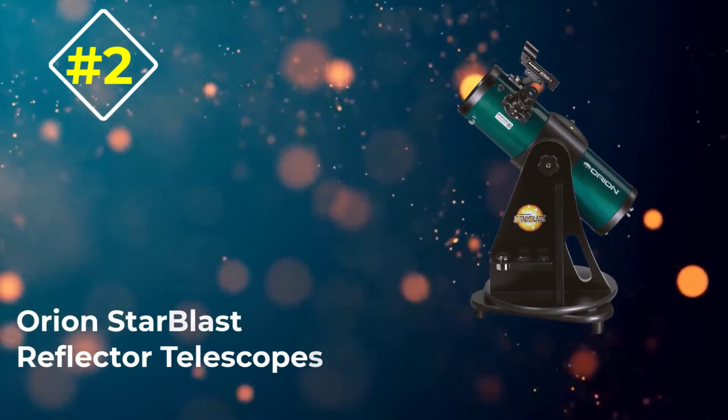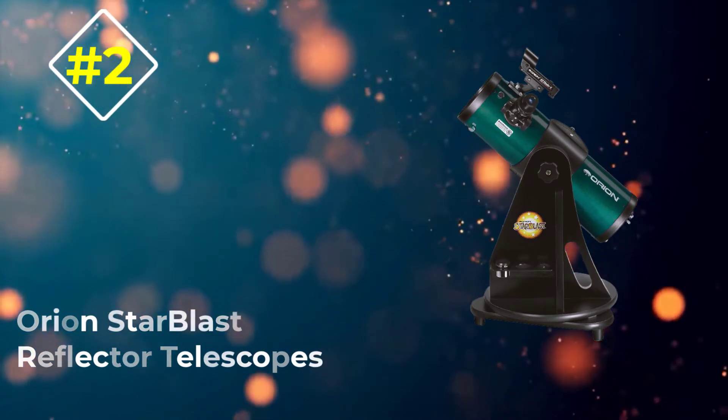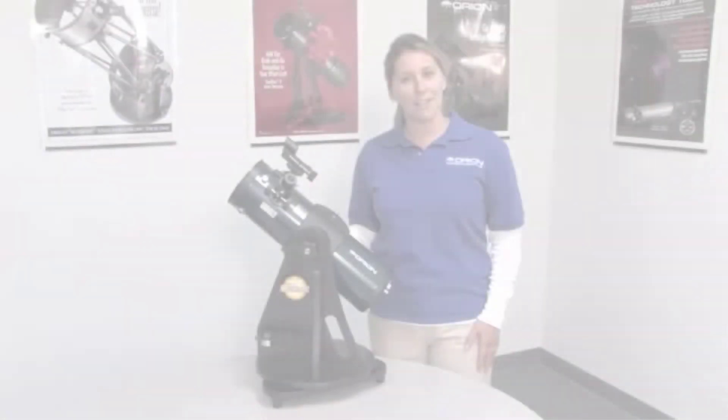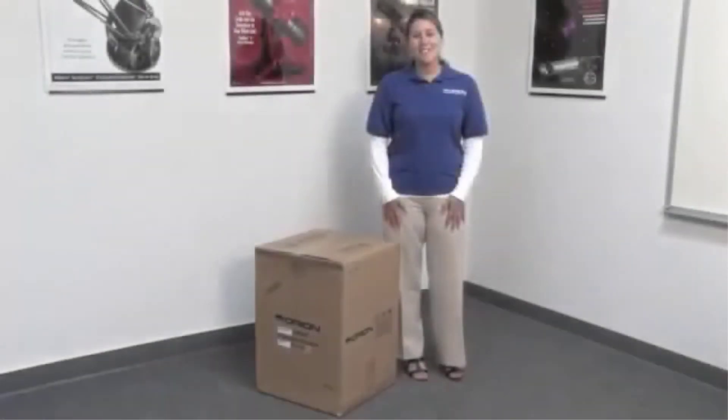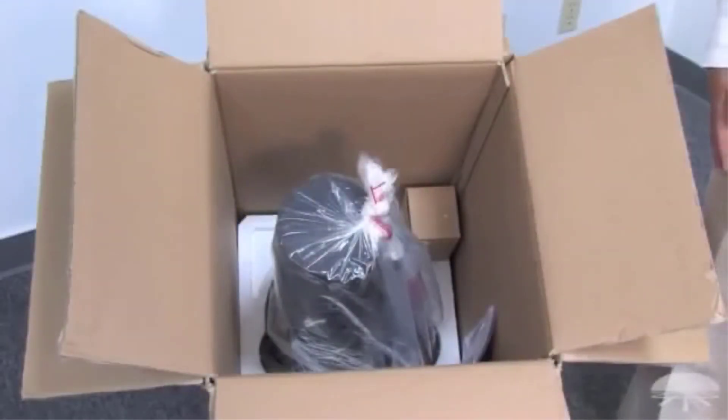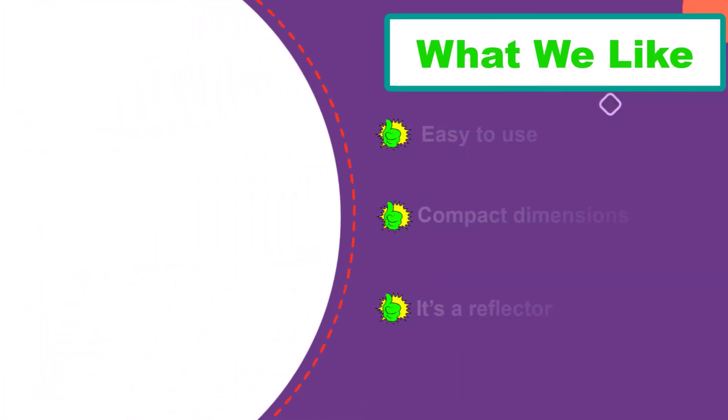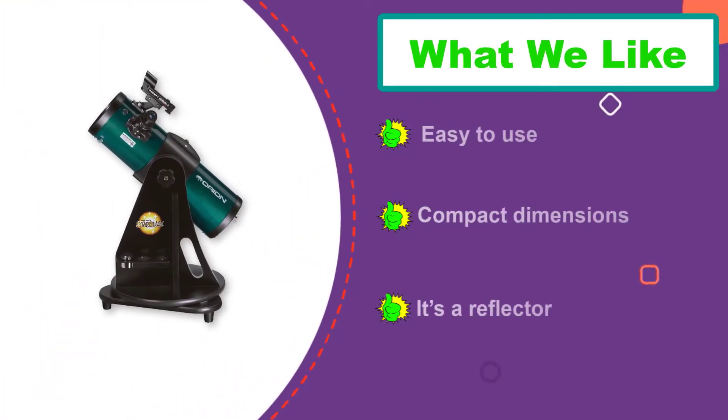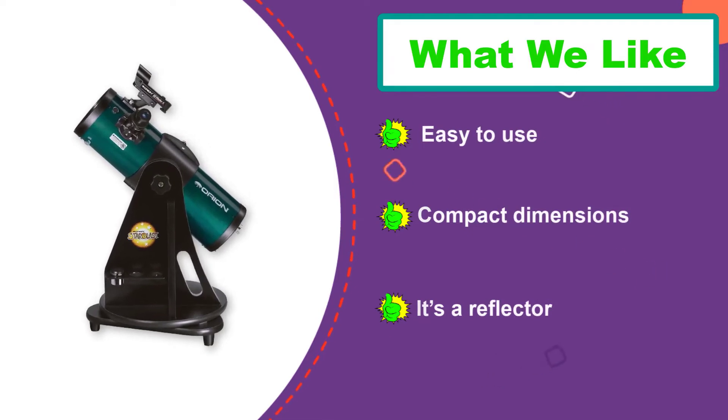Number 2: Orion StarBlast Reflector Telescope. This pre-assembled telescope is advertised as a grab-and-go unit because everything about the design concept is engineered to be as low maintenance as possible. In addition to shipping pre-assembled, it is also compact enough to be stored on a tabletop or desk with ease. The attractive look will make it a fitting decor piece when not in use.